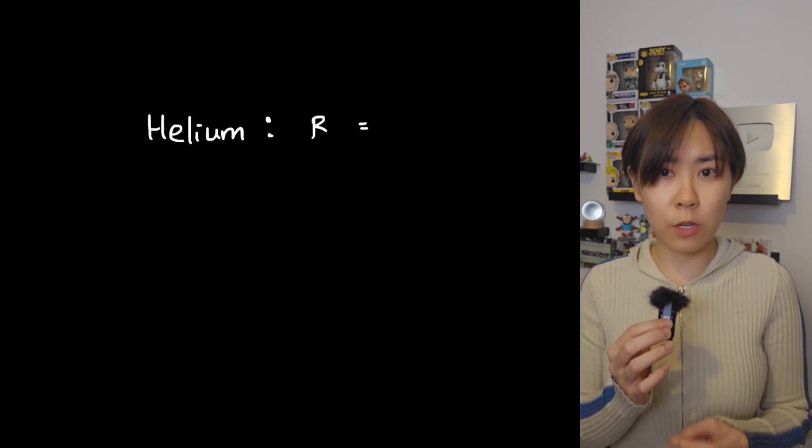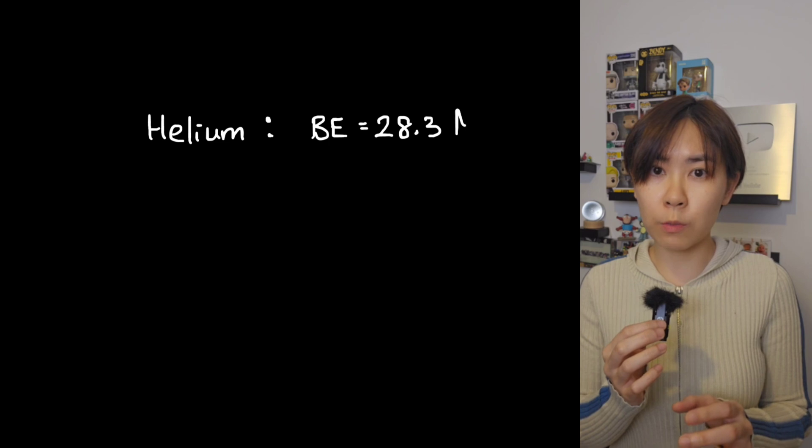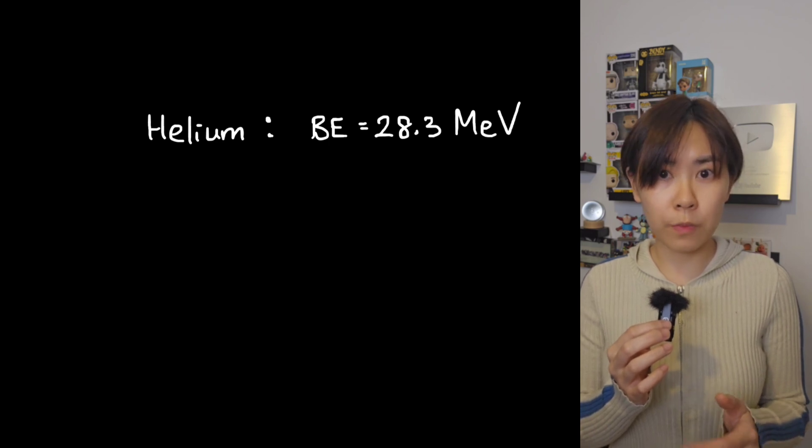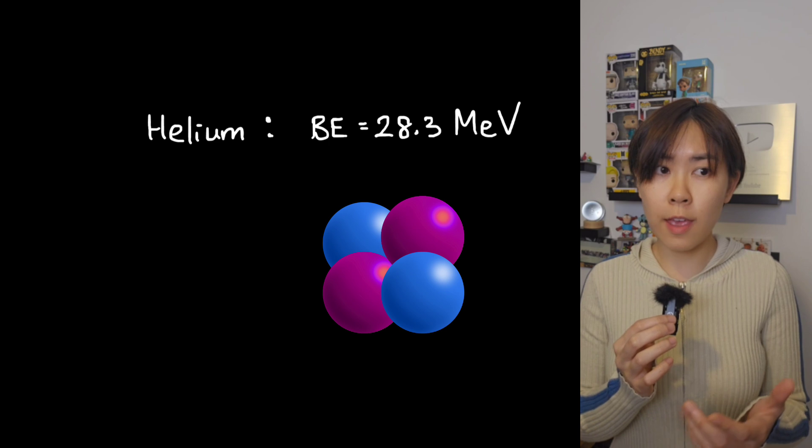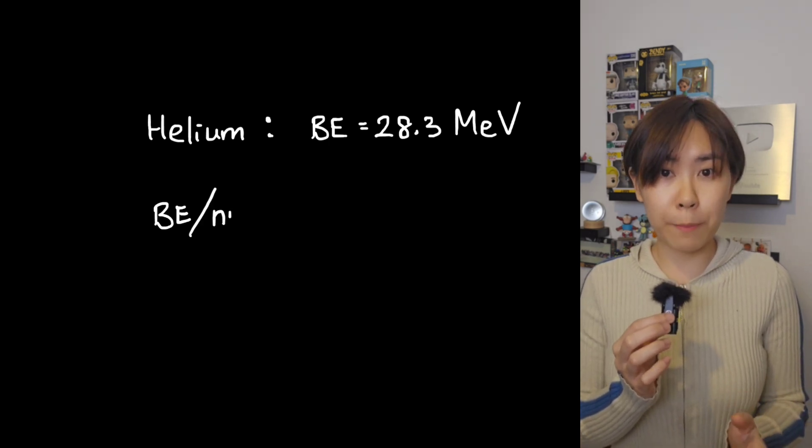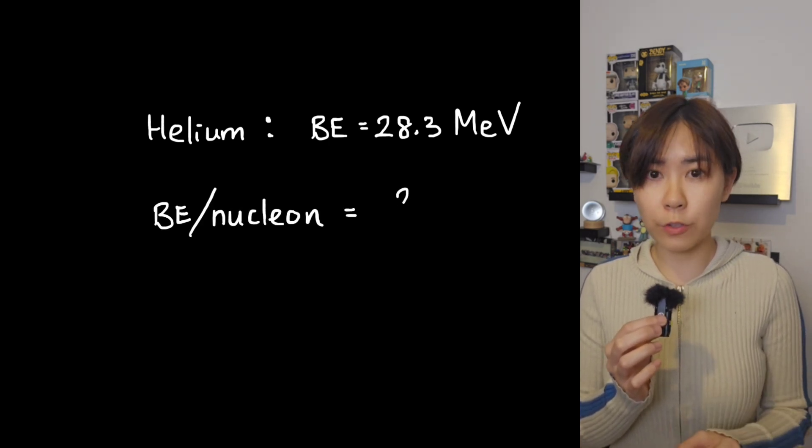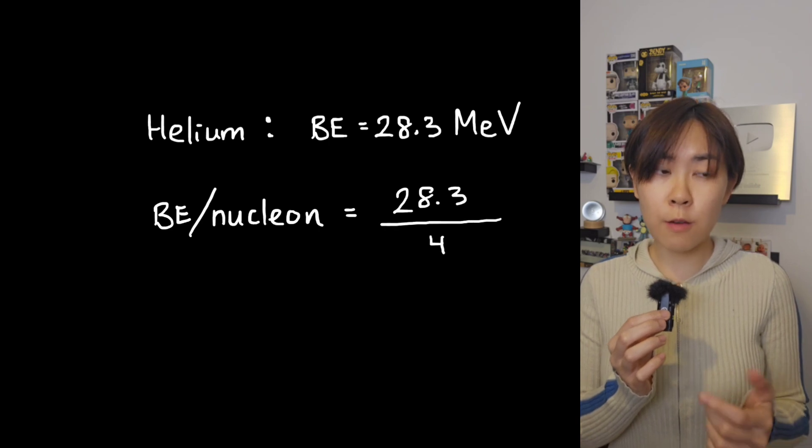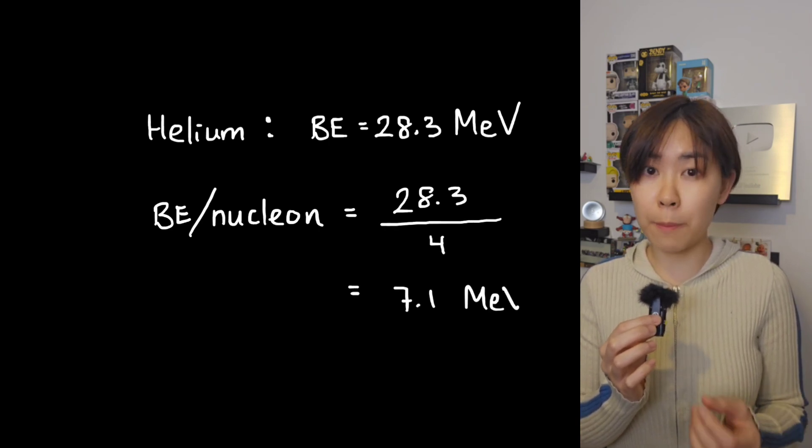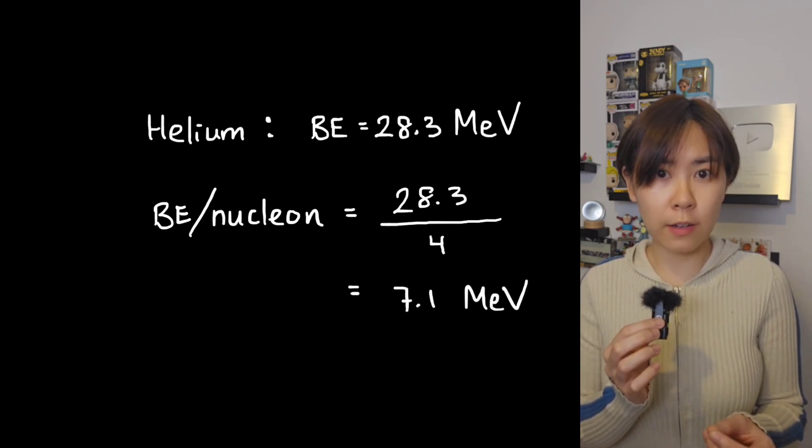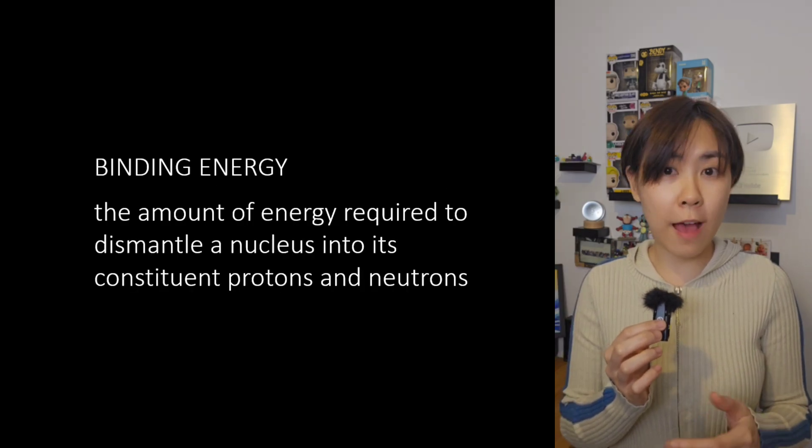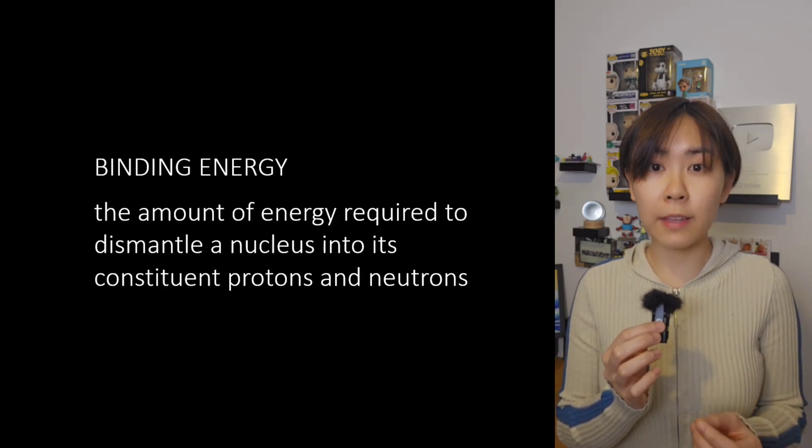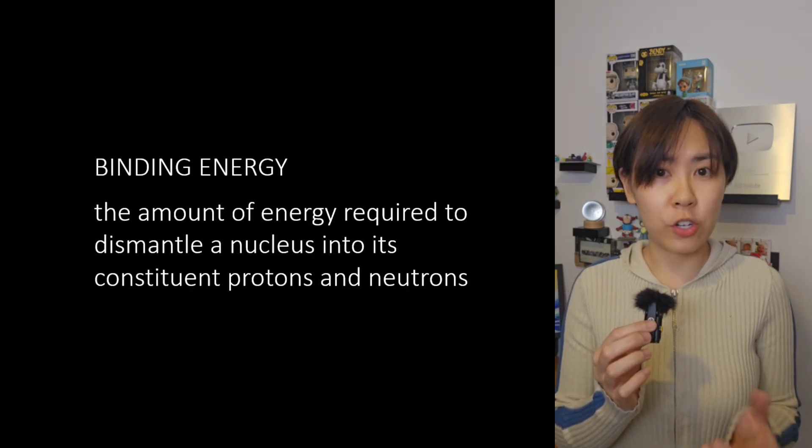the binding energy of a helium nucleus is 28.3 mega electron volts. And you know that a helium nucleus contains two protons and two neutrons. Let's divide 28.3 mega electron volts by four nucleons, which gives the helium nucleus a binding energy per nucleon of 7.1 mega electron volts. So now we have defined both the binding energy and binding energy per nucleon.